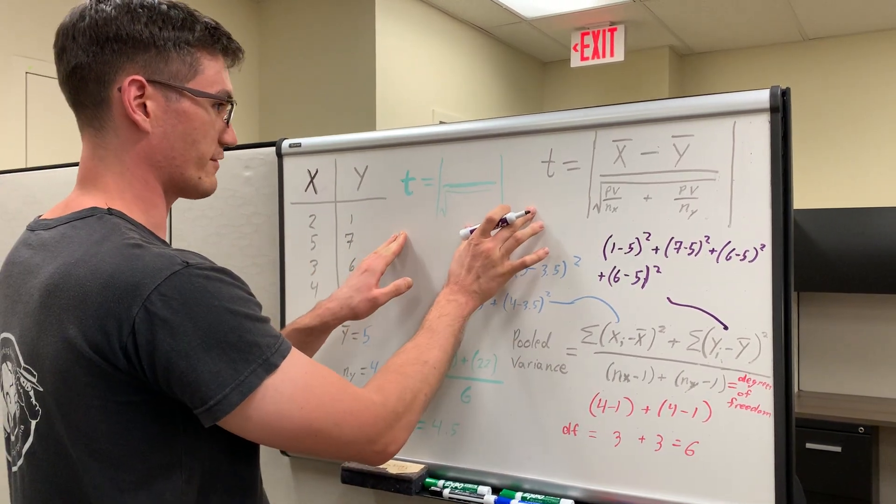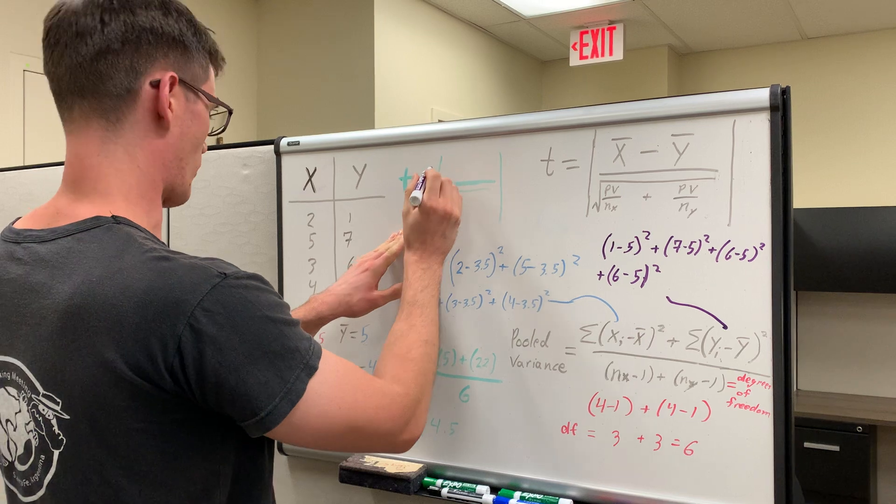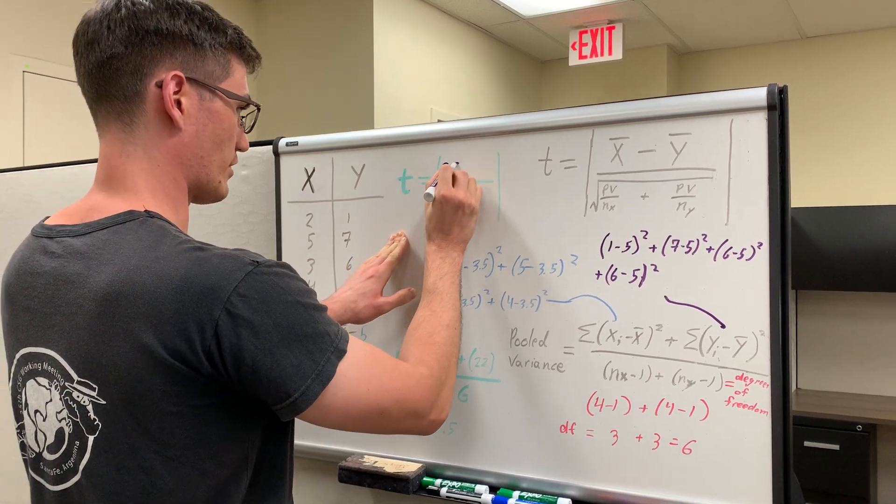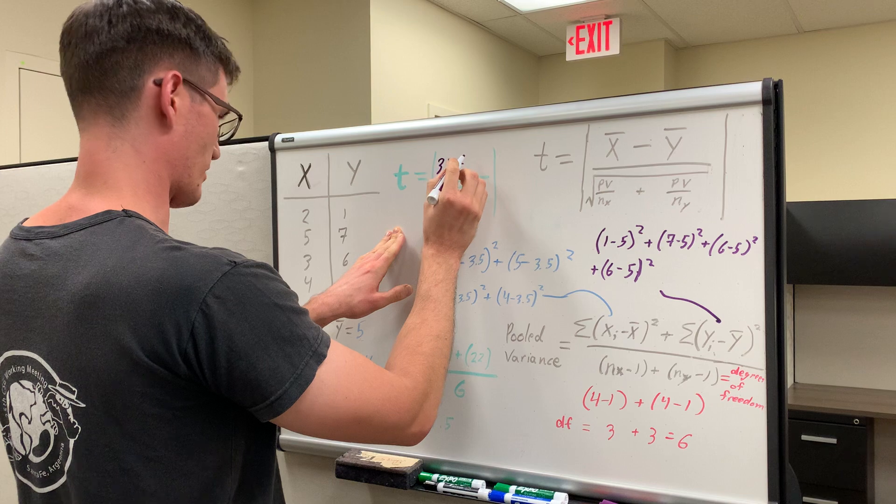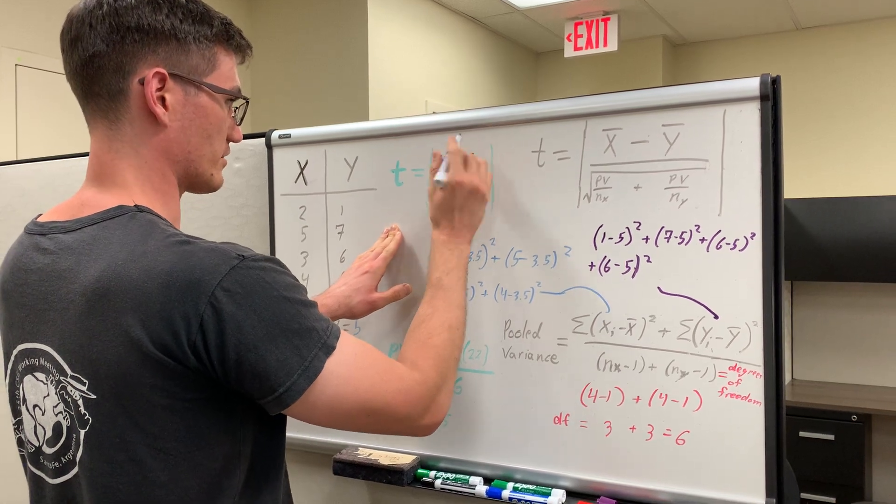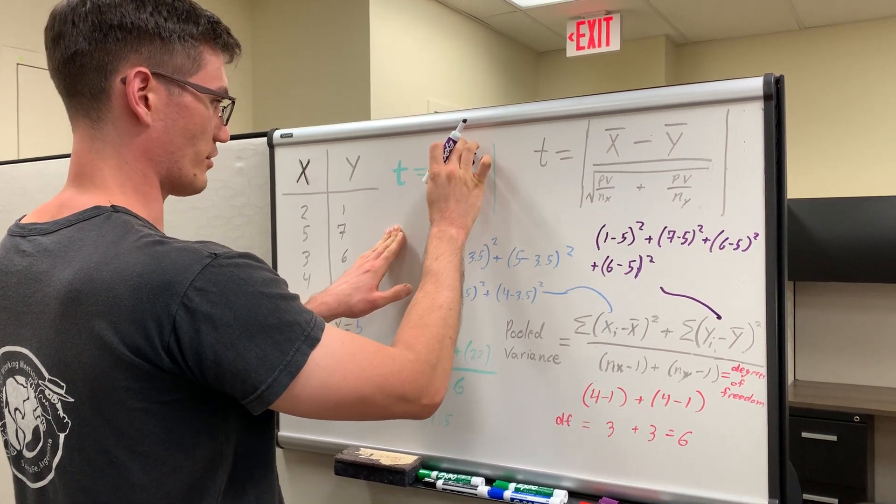So again, let's go back to the main t formula. We already have y bar, which is 3.5, or excuse me, x bar minus y bar, which is 5. So this of course is going to be 1.5.